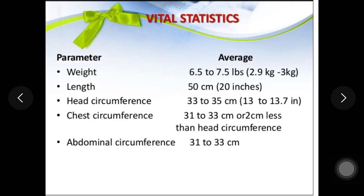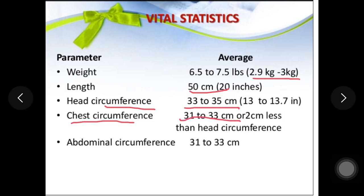Vital statistics and anthropometry assessment: weight should be 2.5 to 3.9 kg; length should be approximately 50 cm, though this depends on genetics. Head circumference should be 33 to 35 cm. Chest circumference is 31 to 35 cm, which should be 2 cm less than head circumference. Abdominal circumference is 31 to 33 cm.